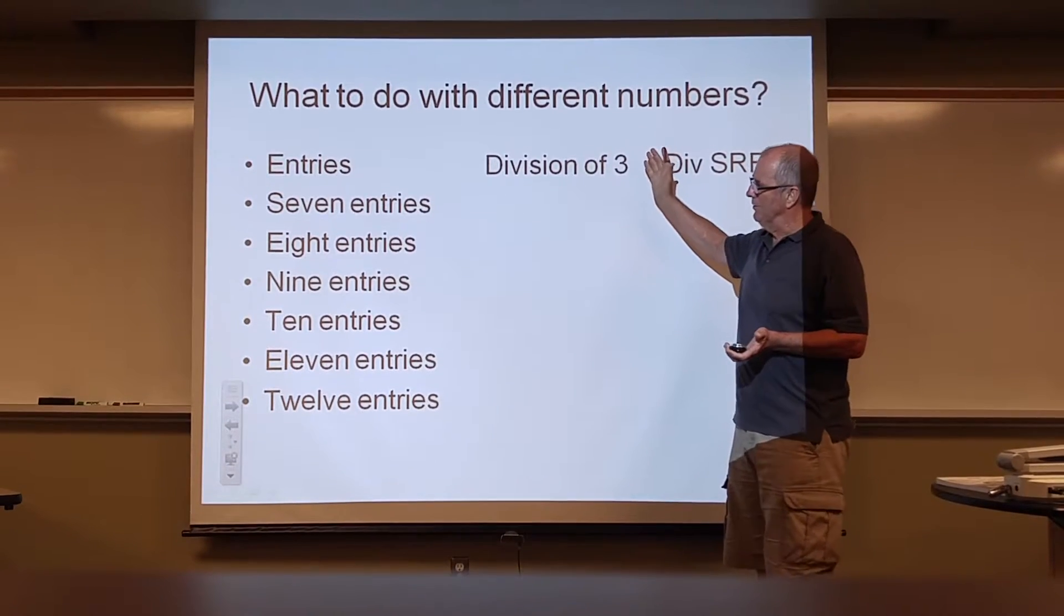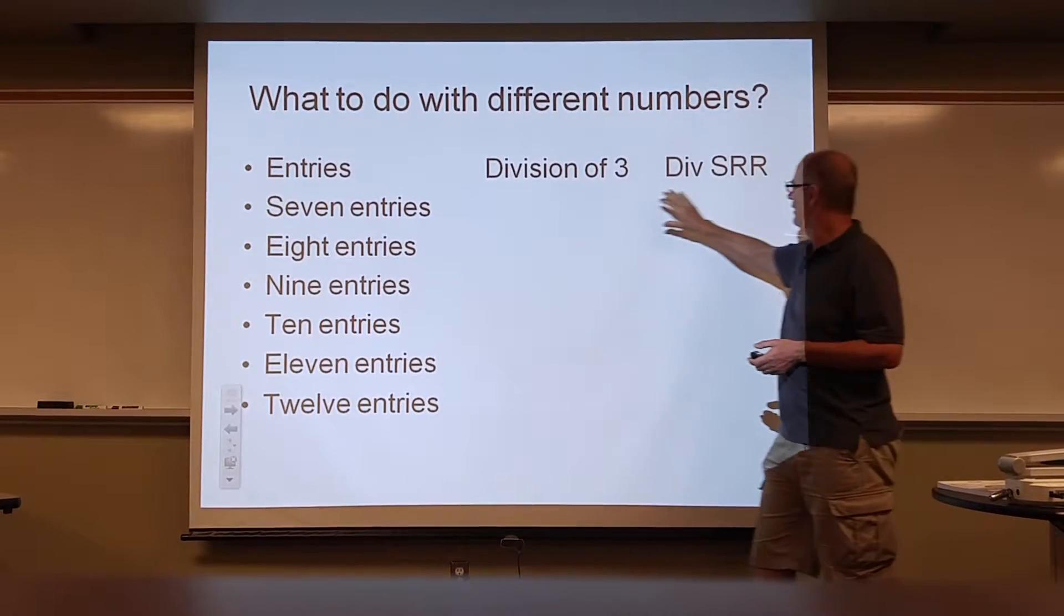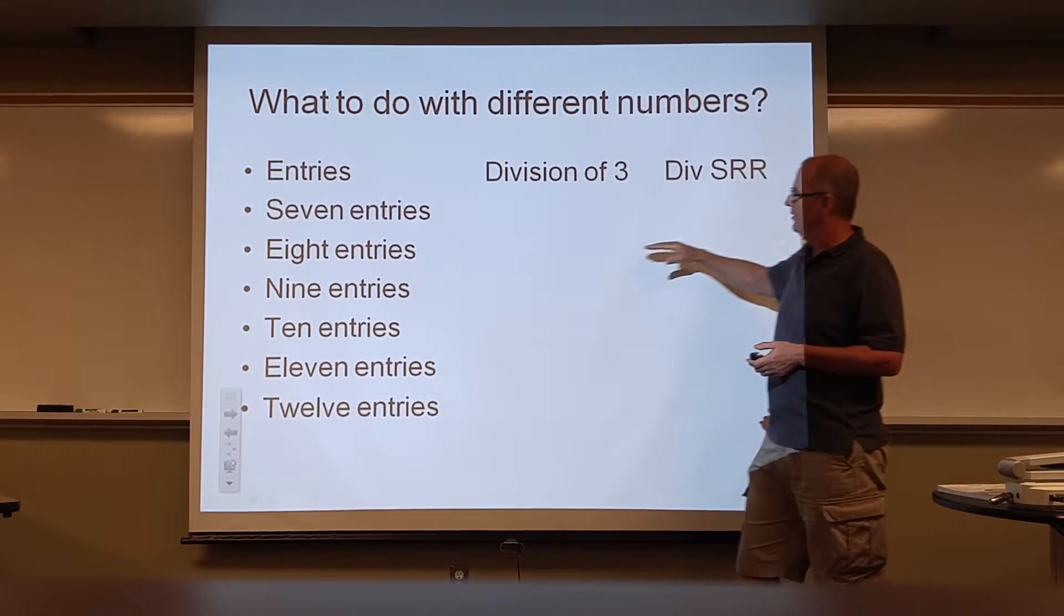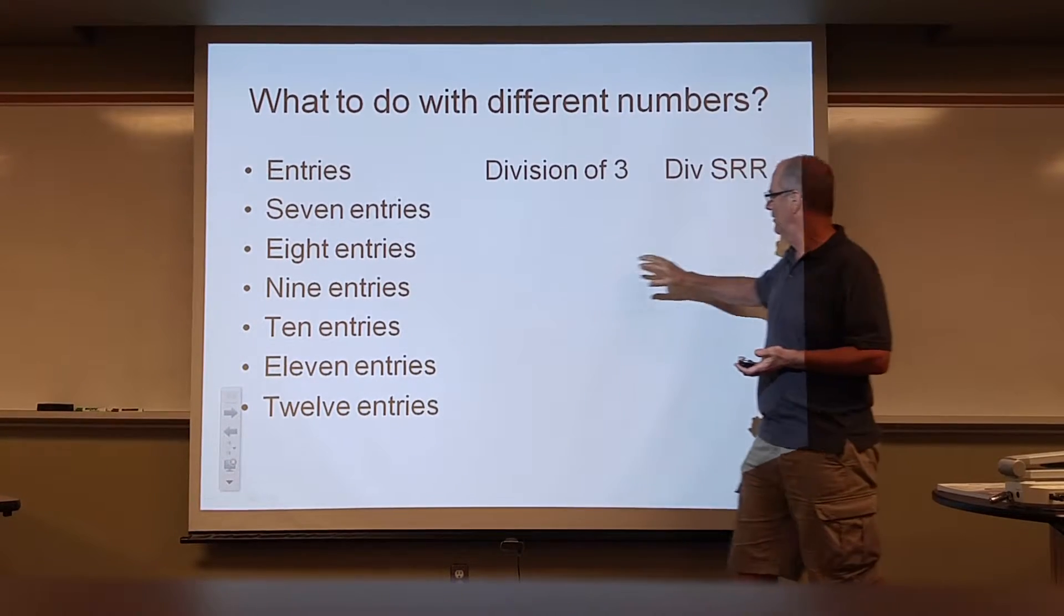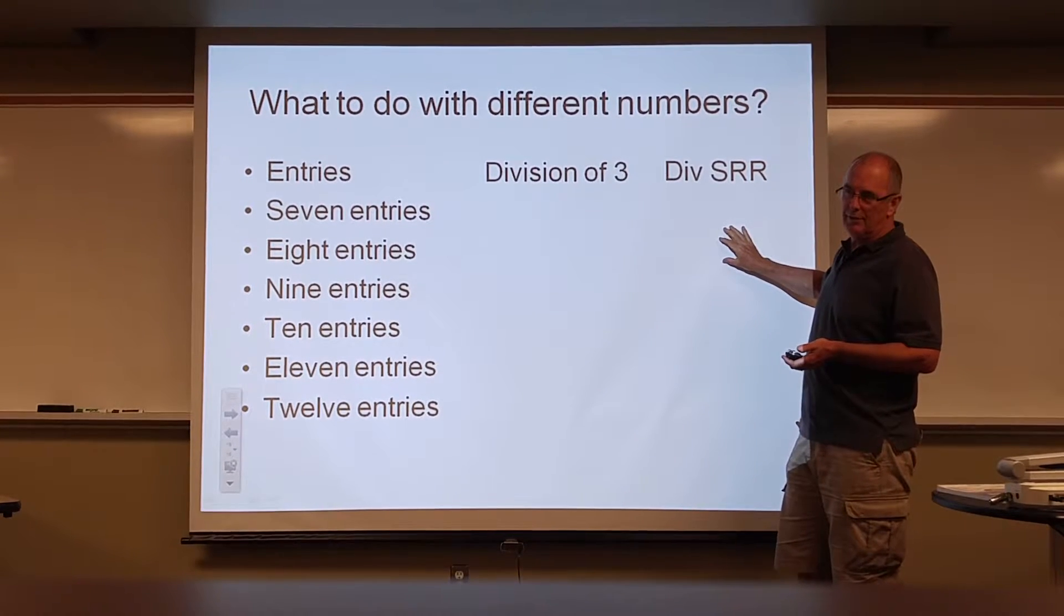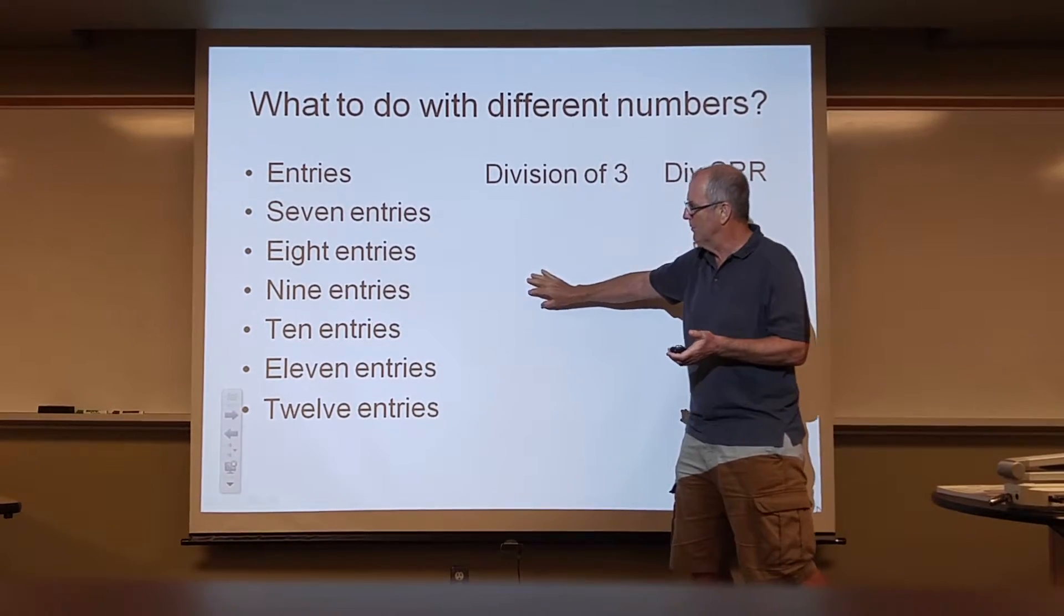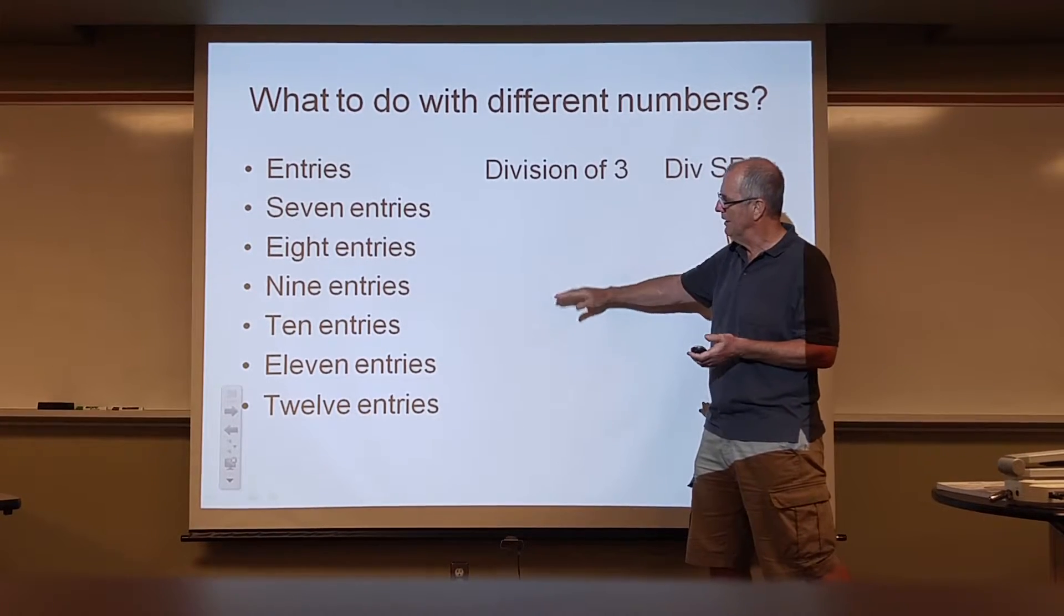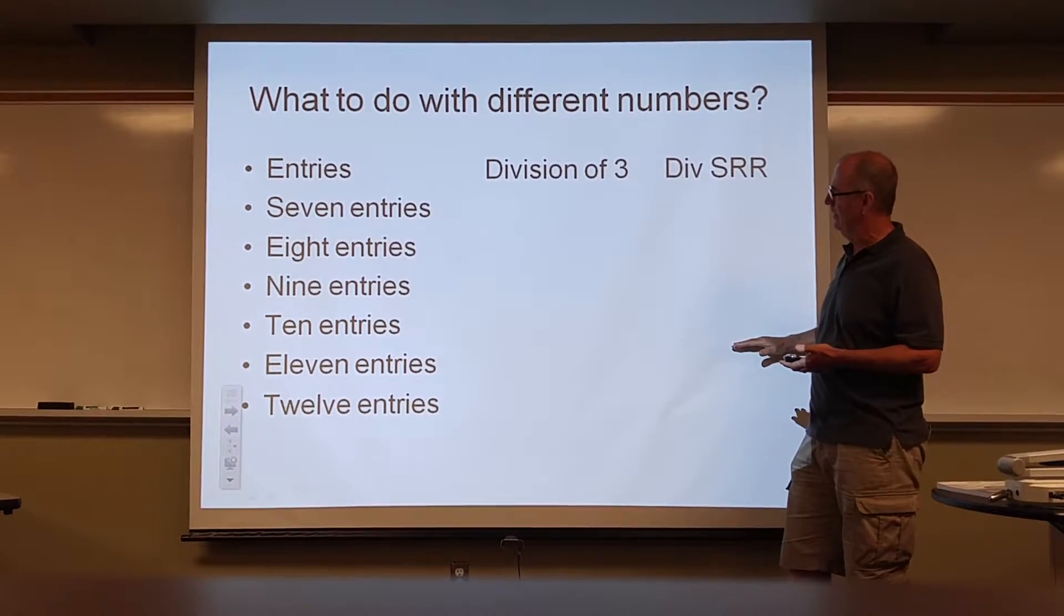You can also do it online. Now, a different number is going to happen with different groups. So with seven entries, for example, we would have one division of three and one division of four in a semi-round robin. For eight entries, we would have two groups of four. So one group of four semi-round robin, one group of four semi-round robin. Then nine entries, I would just do three entries round robin, three entries round robin, three entries round robin. So there would be just three divisions of three. Ten entries, I would do two divisions of three and one division of four, semi-round robin.